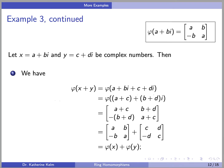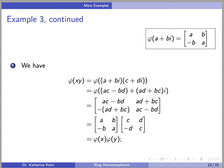Let X = A + Bi and Y = C + Di. Then phi(X + Y) = phi(X) + phi(Y), which follows straightforwardly. The more interesting property is preservation of multiplication: phi(XY) = phi((A + Bi)(C + Di)) = phi((AC − BD) + (AD + BC)i), which equals the matrix [AC−BD, AD+BC; −(AD+BC), AC−BD]. By the properties of matrix multiplication, this equals [A, B; −B, A] · [C, D; −D, C] = phi(X) · phi(Y).